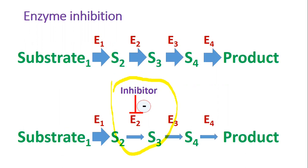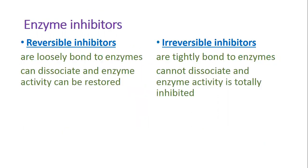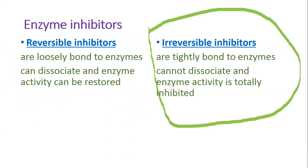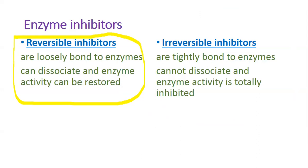There are two groups of inhibitors — reversible and irreversible. Reversible inhibitors are loosely bound to their enzymes and can dissociate, and in this case enzyme activity can be restored. Irreversible inhibitors are tightly bound. In this video, we are going to focus on reversible inhibition. The irreversible type is considered in a second video.